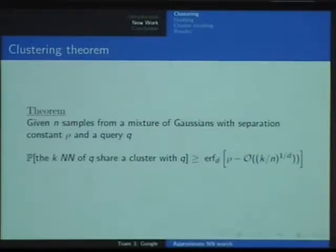This week we proved a theorem about clustering. This is a simplified form, so that I can fit it on one slide. But it says that given n samples from a mixture of Gaussians with a separation constant rho, this separation constant basically tells me how many standard deviations away I have to go before I encounter another Gaussian. So now I'm given a query Q, and I want to ask the probability that Q is sampled from my mixture of Gaussians. I want to ask the probability that my query and the K nearest neighbors of my query share the same cluster with Q.